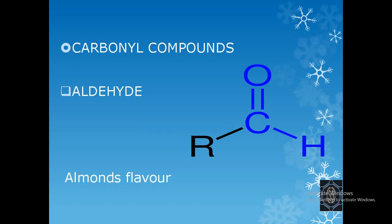Next come carbonyl compounds. They are of two types: aldehydes and ketones. First, aldehydes. In this, the hydrogen is replaced by the CHO group. The almond's flavor is due to the aldehyde group.